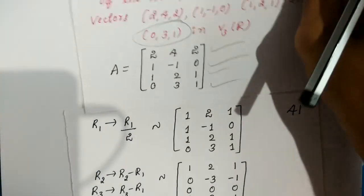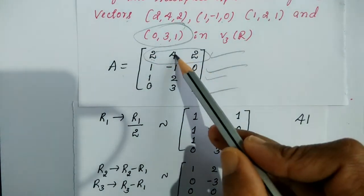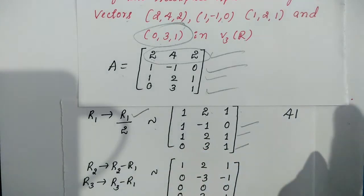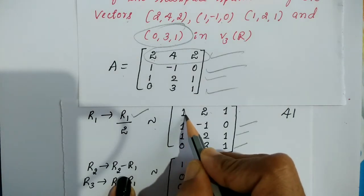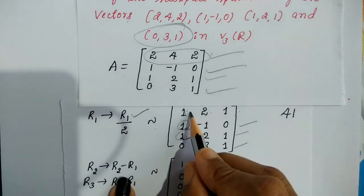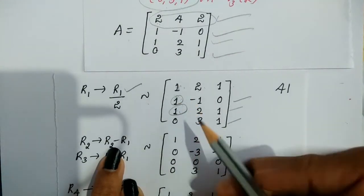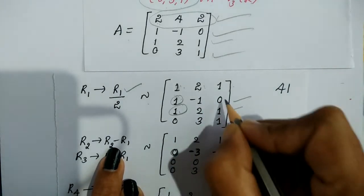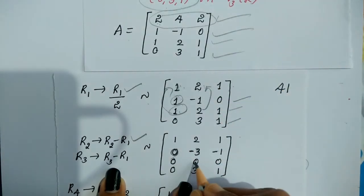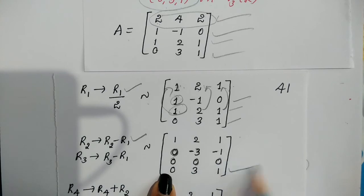The first entry of row 1 is 2; divide row 1 by 2 to get (1,2,1). Now make all entries below the leading 1 equal to 0. Row 4 already starts with 0. Apply R2 → R2 minus R1: 1−1=0, −1−2=−3, 0−1=−1. Apply R3 → R3 minus R1: 1−1=0, 2−2=0, 1−1=0. Row 4 (0,3,1) remains as is.